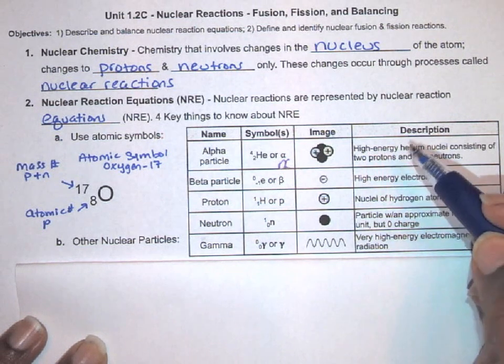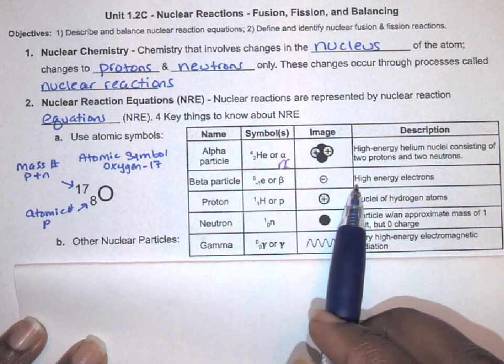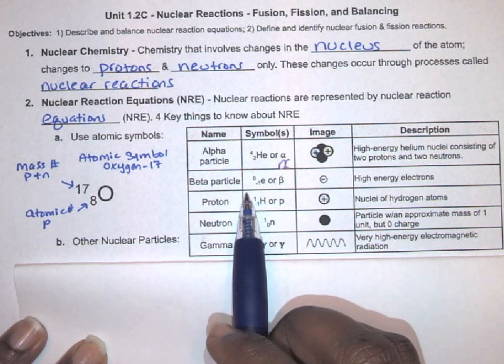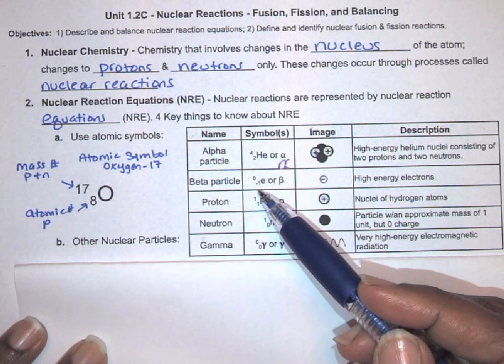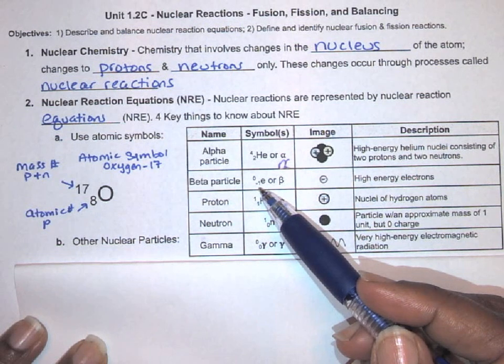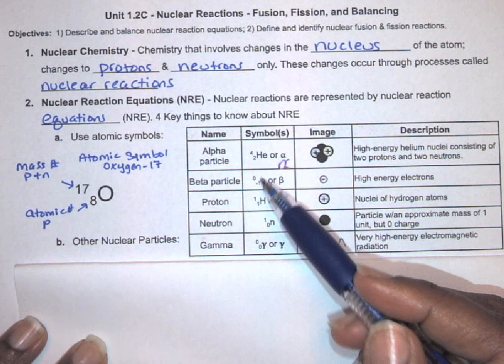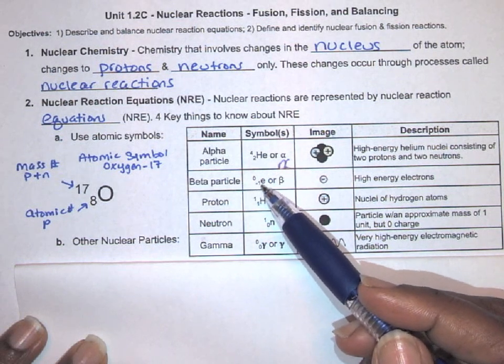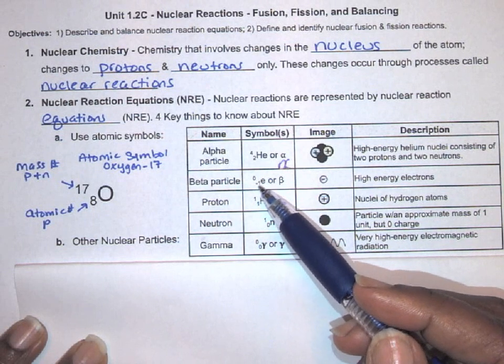Next is a beta particle. A beta particle is a high-energy electron. We can use a symbol for an electron. An electron has no mass, so the upper left number will be zero. Because an electron has a negative one charge, if it was in a nucleus it would contribute a negative one charge. In the case of particles, what we do is put the charge where the atomic number would be. Usually the charge is on the upper right, but we put them on the lower left where the atomic number would be. We only do that for particles.